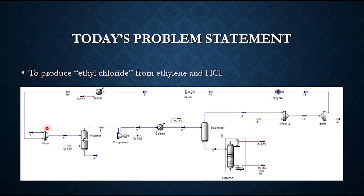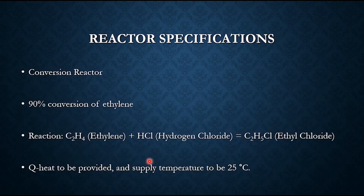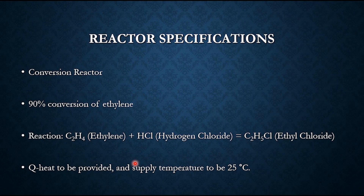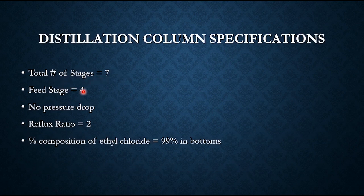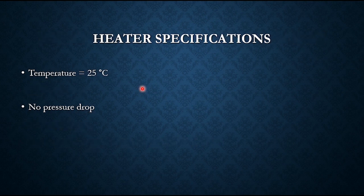This is the overall schematic of ethyl chloride production, and we will be solving this in Aspen HYSYS. We will be selecting the fluid package as Peng-Robinson. The reactor specification is a conversion reactor where ethylene reacts with HCl to produce ethyl chloride, with 90% conversion of ethylene and Q heat specified so the outlet temperature is no more than 25 degrees centigrade. Distillation column specifications: seven total stages, feed stage four, no pressure drop, reflux ratio of two, and 99% ethyl chloride purity in bottoms.